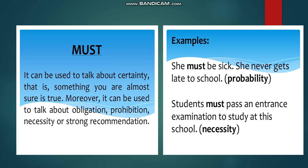When talking about 'must,' it can be used to talk about certainty — something you are almost sure is true. It can also be used to talk about obligation, prohibition, necessity, or strong recommendation. For example: 'She must be sick; she never gets late to school' — that is probability.